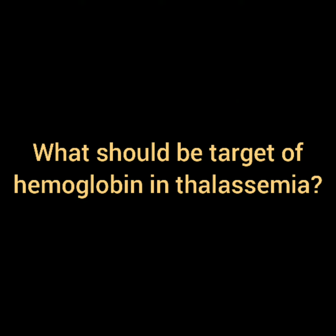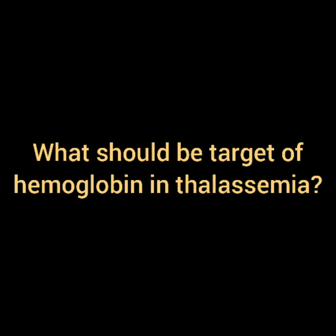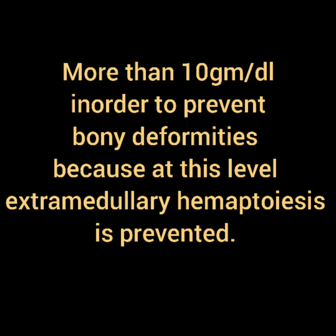What should be the target hemoglobin in a thalassemic patient? It should be greater than 10 g/dL in order to prevent bony deformities, because above this level extramedullary hematopoiesis is prevented and hence the patient does not develop bony deformities. Inshallah, through all these videos almost each and every station related to the TOACs of IMM and Part 2 will be covered. Stay in touch, and if you want a video on any station, you may inbox me. Thank you.